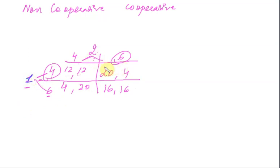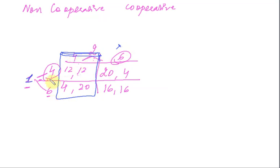Now, if firm 1 knows that firm 2 is going to charge 4 rupees, then firm 1's choice is: charge 4 and earn 12, or charge 6 and earn 4. You would charge 4 because it gives a higher profit. So if you know firm 2 is going to charge 4, you would rather also charge 4 and earn a profit of 12.